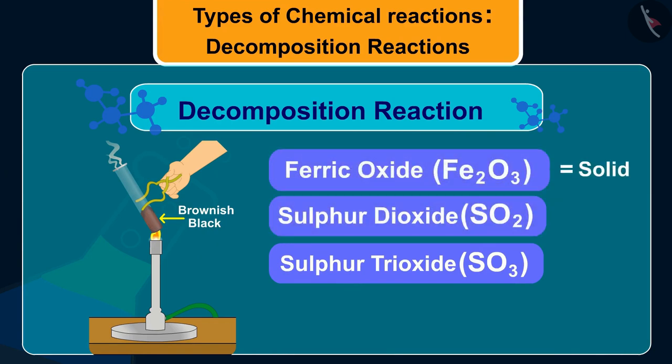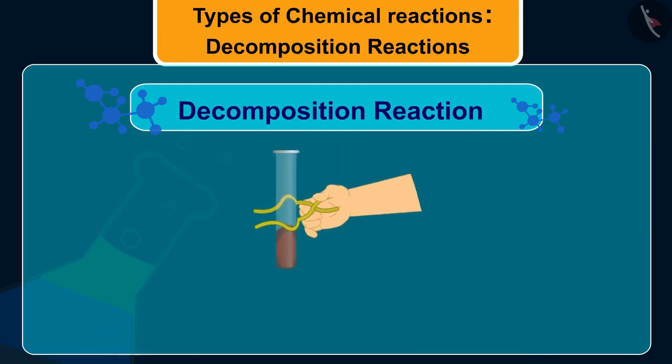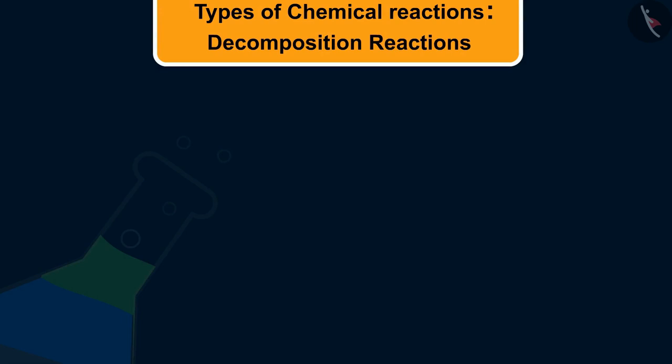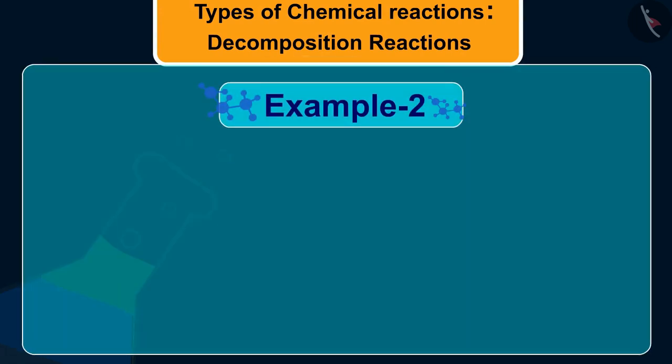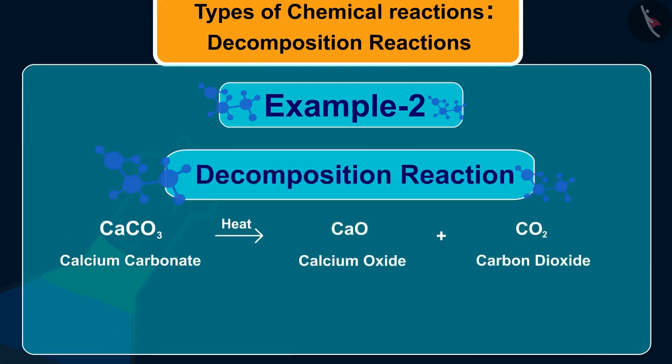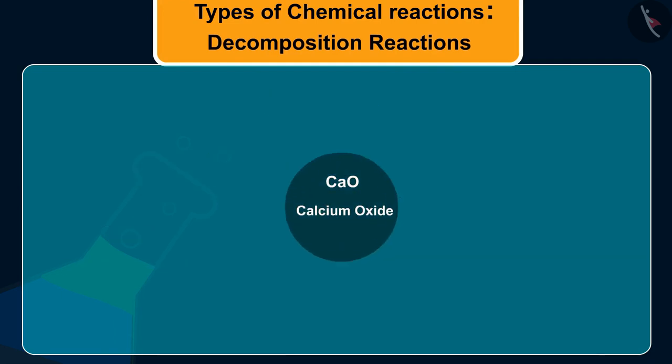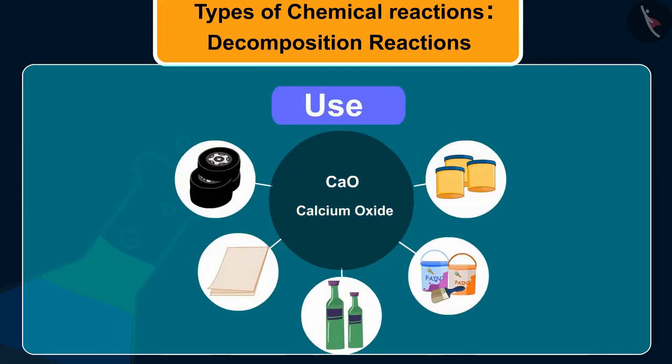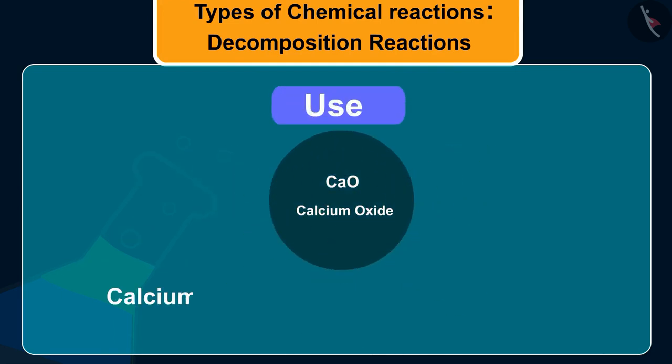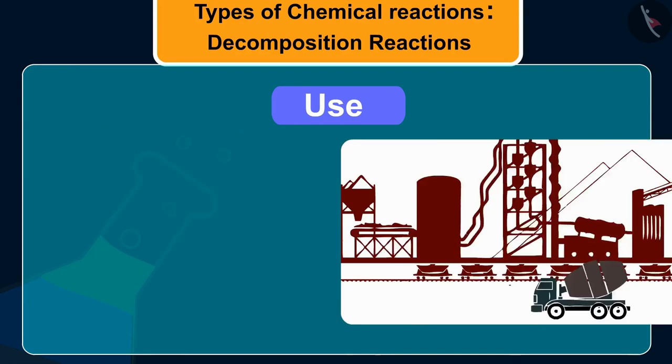Let us now discuss one more example of decomposition reaction, which is decomposition of calcium carbonate to calcium oxide and carbon dioxide. This is an important decomposition reaction used in various industries. Calcium oxide is called lime or quick lime and is used in the manufacture of cement.